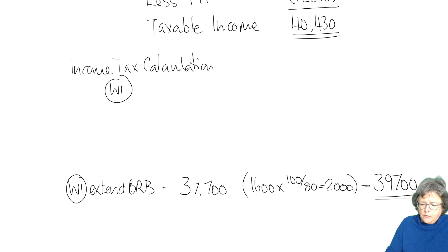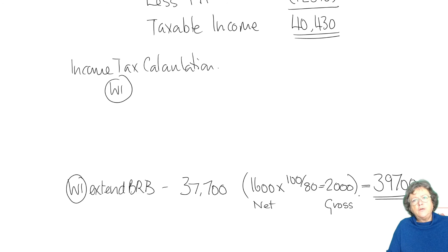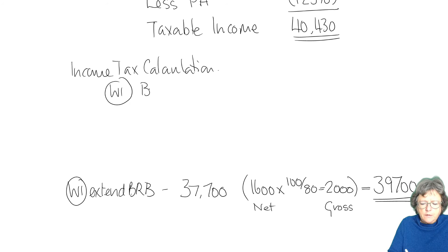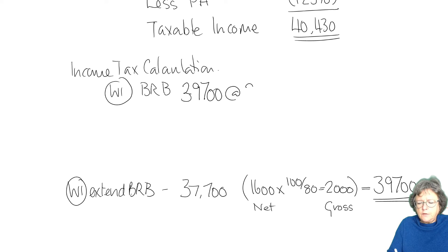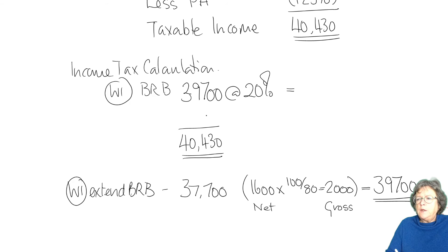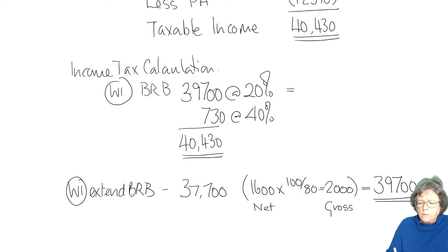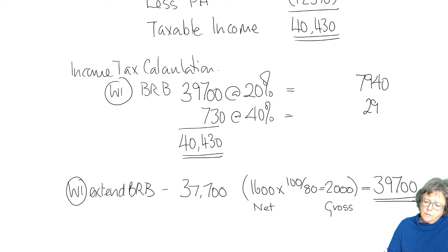Label everything really well — this is the net, this is the gross — showing your understanding of the rules. The basic rate band is now £39,700 taxed at 20%. The balance up to £40,430 is £730, taxed at 40%. That gives us £7,940 and £292, for a total income tax liability of £8,232.